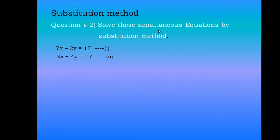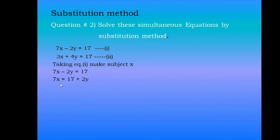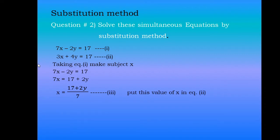Now solve these simultaneous equations by substitution method. For question number 2 I have taken the same question. For the substitution method, we take one of these equations and make one variable the subject. I'm taking equation 1. To make x the subject, I'll move other values to the other side of the equality. So 7x will equal 17 plus 2y, and to isolate x I'll divide by 7. I have set this as equation 3, derived from equation 1.